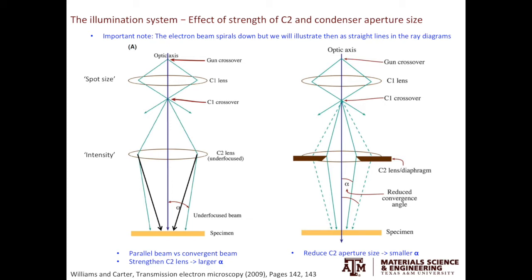On the other hand, the larger value of alpha can also lead to more severe spherical aberration. In practical situations, we usually like a larger alpha. Usually that leads to a refined probe size, thus better resolution in STEM.